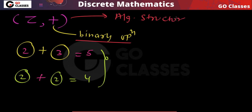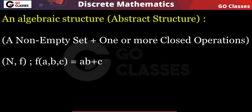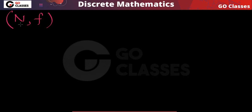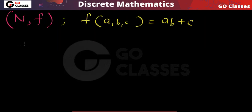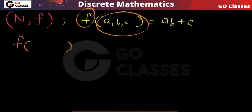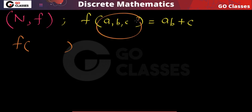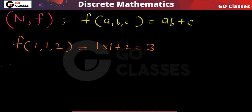In an algebraic structure we can also have ternary operations. For example, consider the set of natural numbers with an operation f defined as f(a, b, c) = ab + c. This operation takes three values — same or different — from the set of natural numbers. For instance, f(1, 1, 2) = 1×1 + 2 = 3. This operation f is a ternary operation.